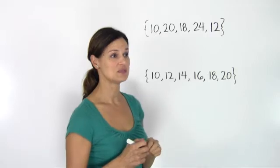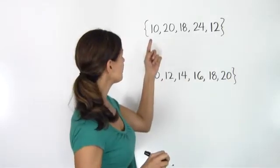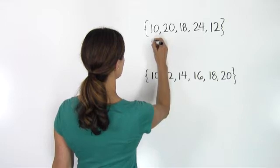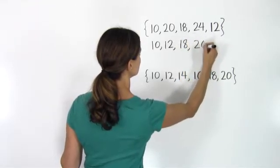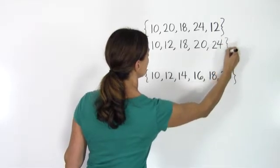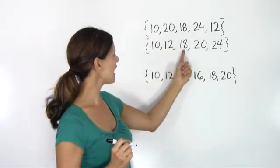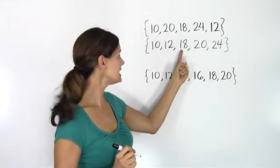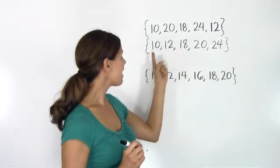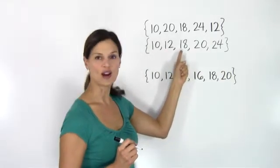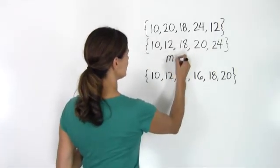First, before we start calculating our median, we want to arrange these numbers in order from least to greatest. So I rewrite this as {10, 12, 18, 20, 24}. Then I find the middle value. The middle value here is 18. There are two values on the left and two values on the right. So with five values, the third one over is my middle value or median. In this case, the median is 18.